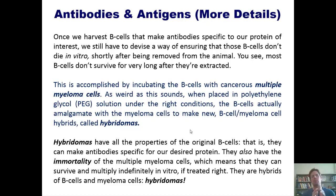As weird as this sounds, when placed in polyethylene glycol or PEG solution under the right conditions, B cells actually amalgamate with myeloma cells to make new B cell myeloma cell hybrids, which are called hybridomas. Hybridomas have all of the properties of the original B cells. That is, they can make antibodies that are specific for our desired protein. However, they also have the immortality of multiple myeloma cells, which means that they can survive and multiply indefinitely in vitro if treated right. That is, they're essentially cancer cells. They don't die by apoptosis the way cells normally do. They are hybrids then of B cells and myeloma cells. In other words, hybridomas.